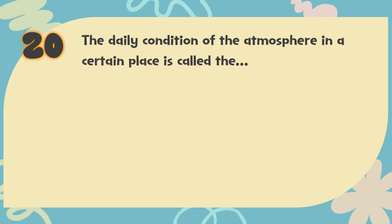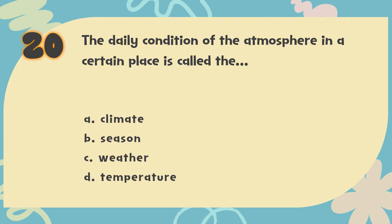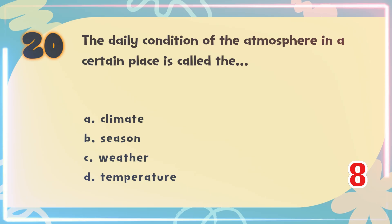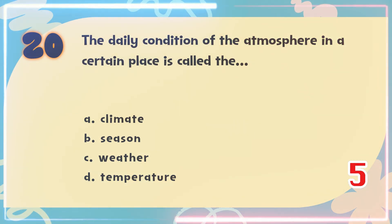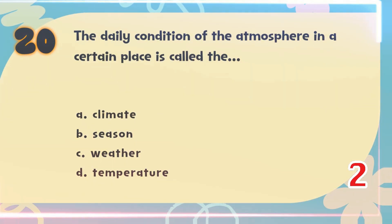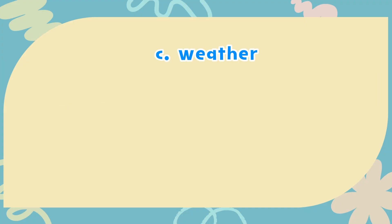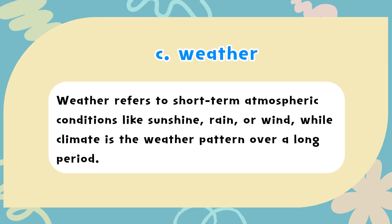Number 20: The daily condition of the atmosphere in a certain place is called the — A. Climate, B. Season, C. Weather, D. Temperature. The correct answer is C. Weather. Weather refers to short-term atmospheric conditions like sunshine, rain, or wind, while climate is the weather pattern over a long period.